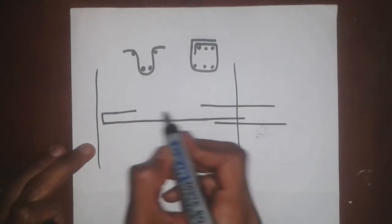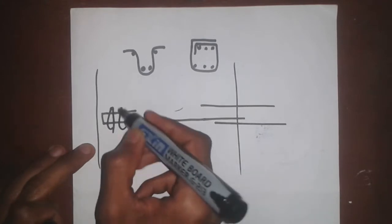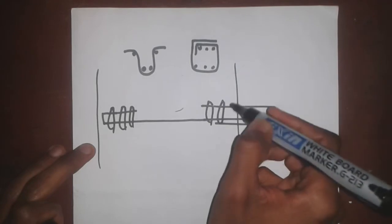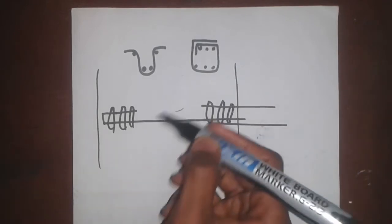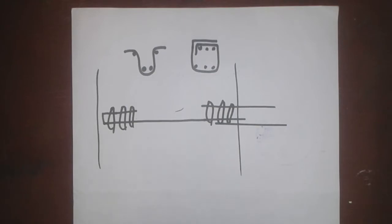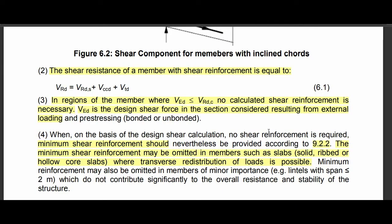If you're not quite here, you can't use the reinforced element. You won't do this to the top with the bottom of the board. This is the design of concrete structures, Part 1.1, PDF, page 3.2. On the basis of the design shear calculation, no shear reinforcement is required. If you calculate the shear method, the shear reinforcement is required. In regions of the member where VED is less than VRDC, no shear reinforcement is required.